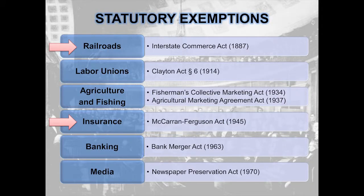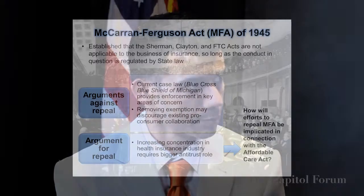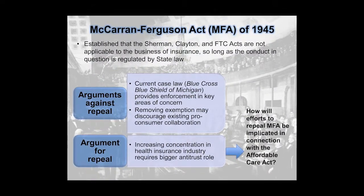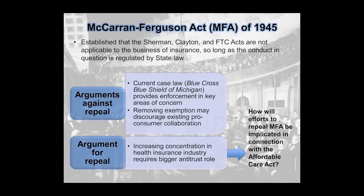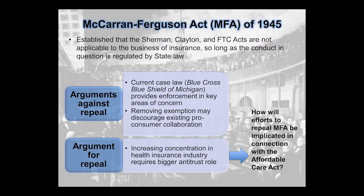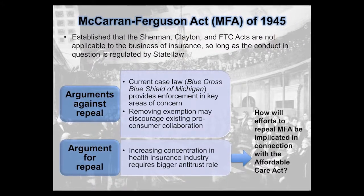Recent history suggests that Congress's direct involvement in antitrust from a legislative standpoint will likely be targeted toward statutory antitrust exemptions, such as those currently enjoyed by the railroad and insurance industries. The railroad legislation to repeal the antitrust exemption for railroads has been of interest before. There's actually a surprising number of McCarran repealers out this year on the House side, both Republicans and Democrats, so it'll be interesting to see if they can reach a bipartisan compromise.